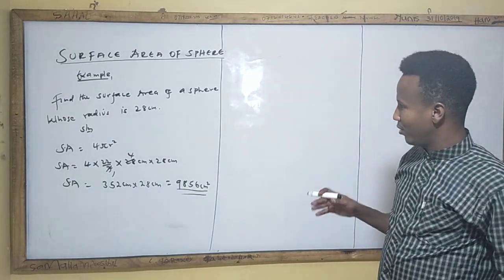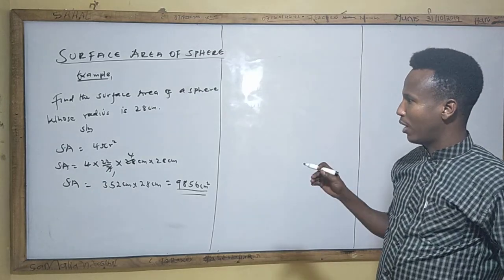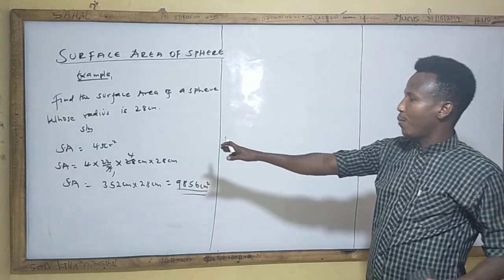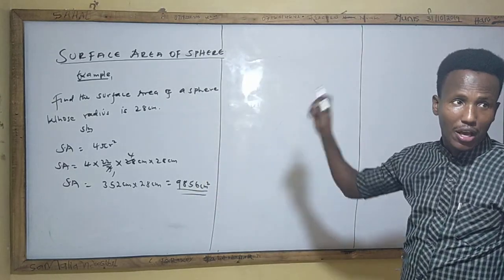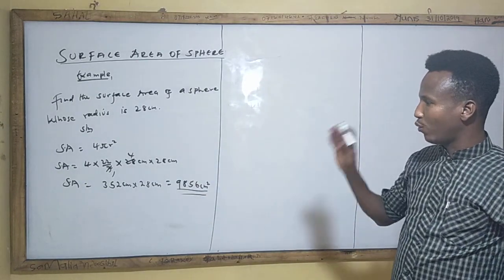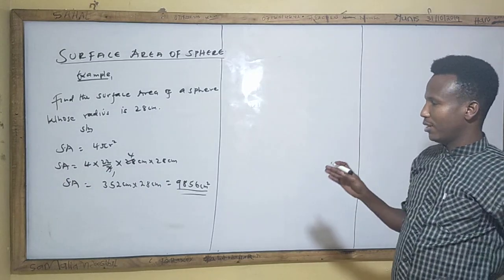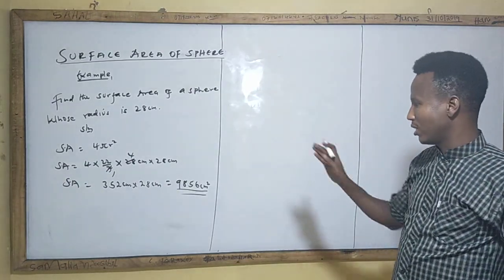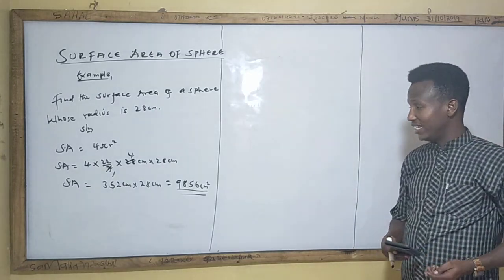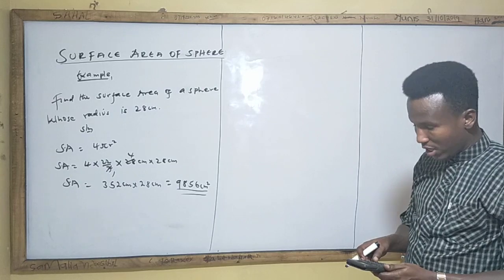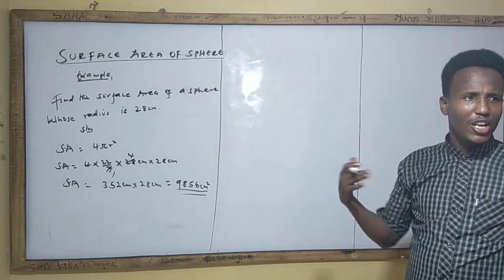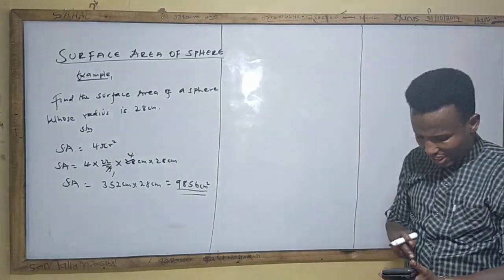So you will proceed using this formula. So far you have the radius, you say SA which is the surface area is equal to 4πr². In this situation we know that four is constant, π is also constant in the formula, and r is given which is 28. So you say four times π value which is 22/7 times 28 centimeter times 28 centimeter. The final answer to this problem is 9856 centimeter squared.